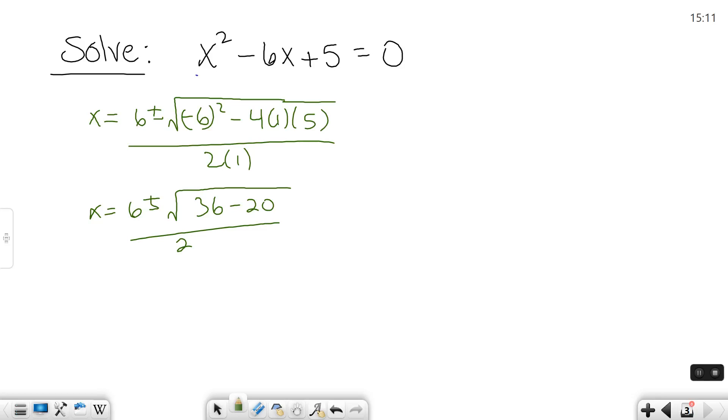So again, continue to simplify and you'll get your two solutions. 36 minus 20 is 16 and the square root of 16 is 4. So, again, what we have is plus or minus. So split them up into two fractions.